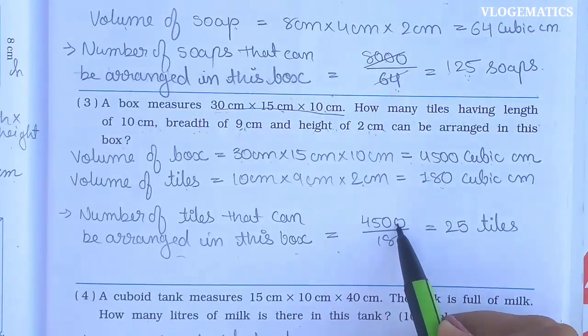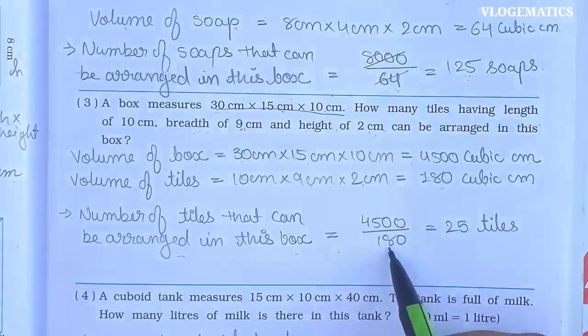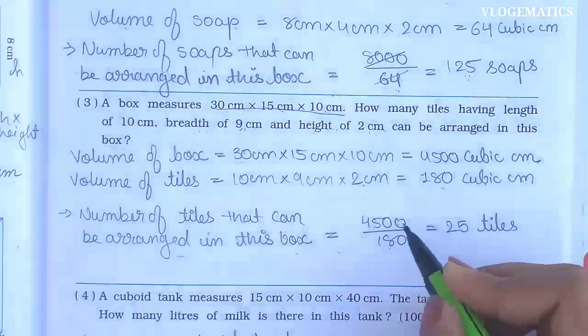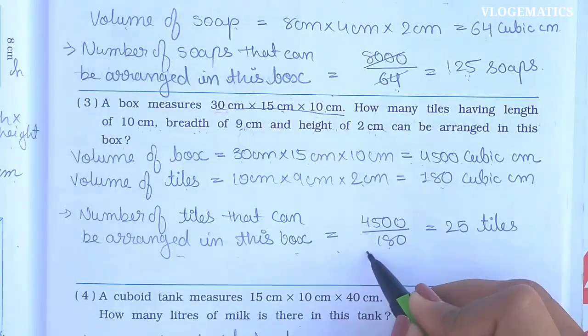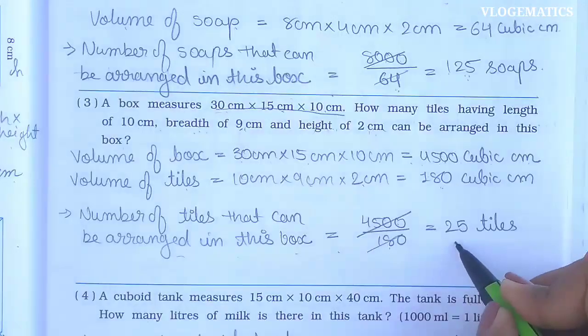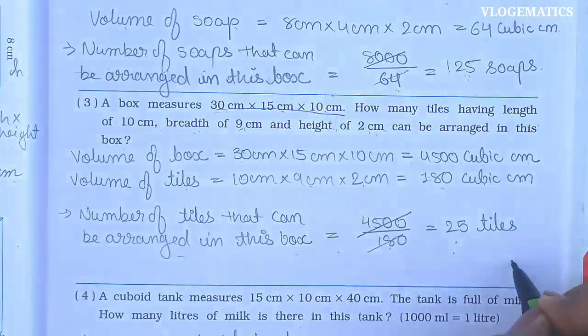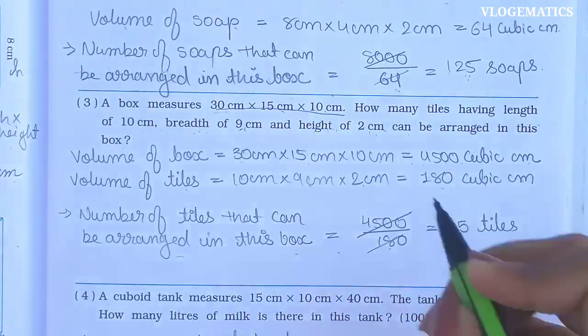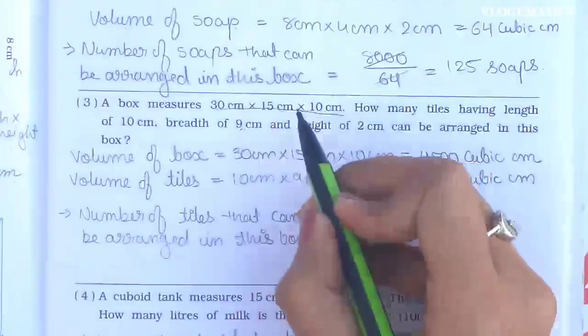Number of tiles that can be arranged = volume of box ÷ volume of tiles = 4500 ÷ 180 = 25. So we can arrange 25 tiles in this box.